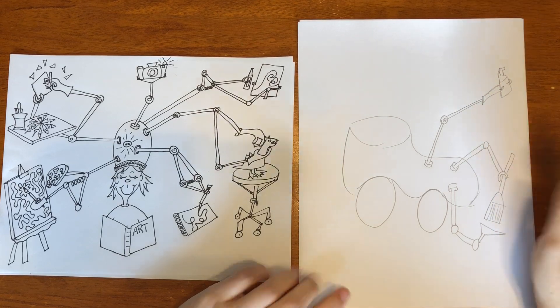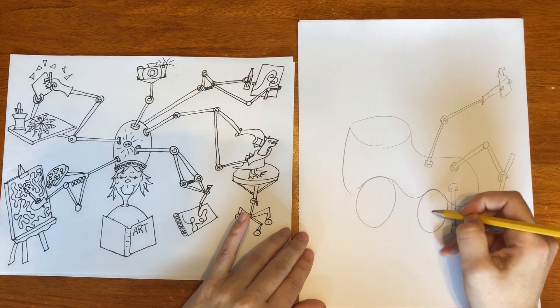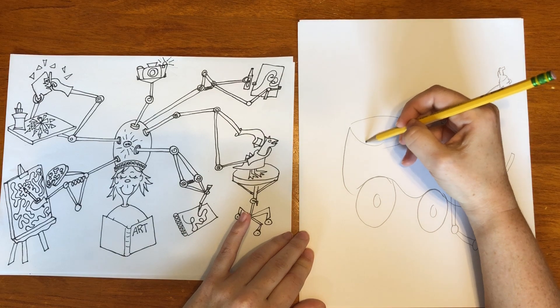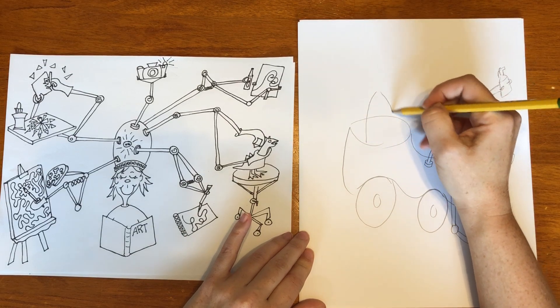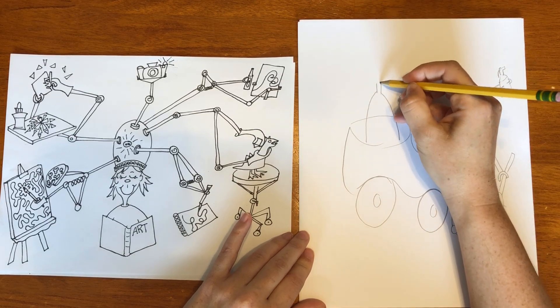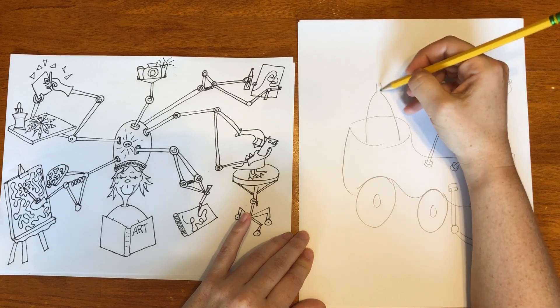You can add bells, whistles. You can add lights. You can put a person in here driving. So let's talk about that Seuss face.